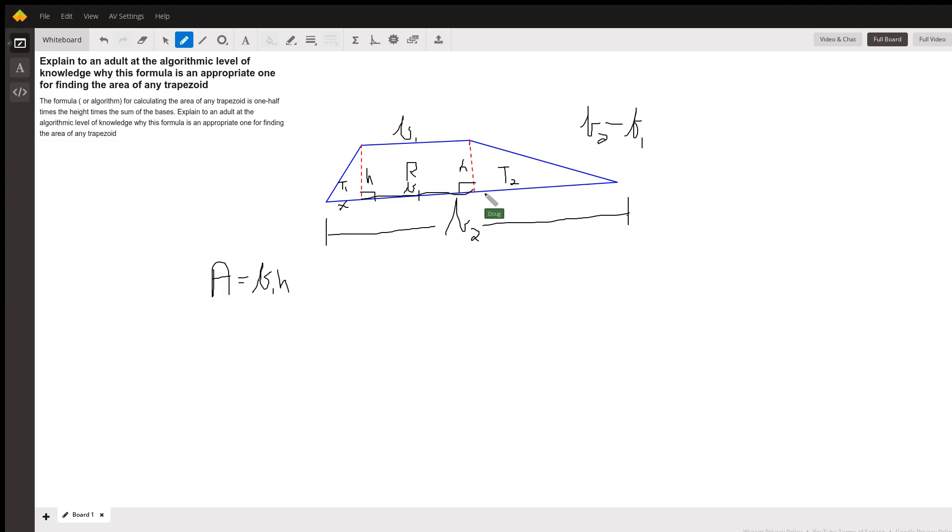That means this leg right here must be B sub 2 minus B sub 1, take away X.